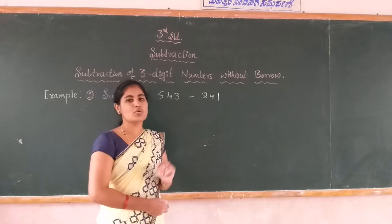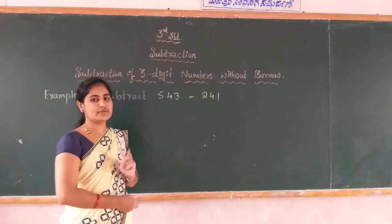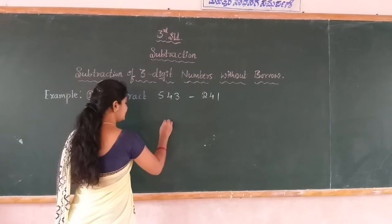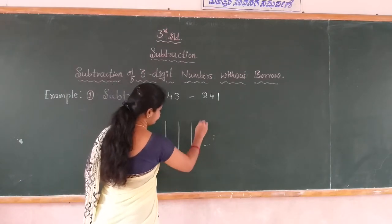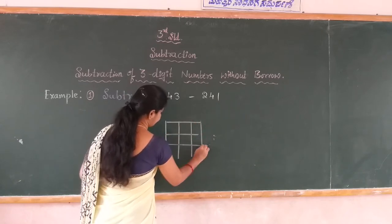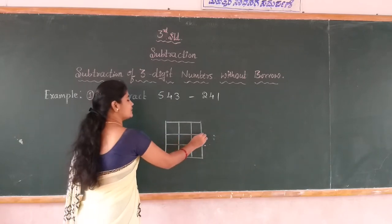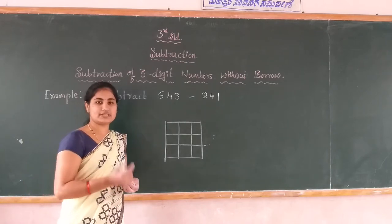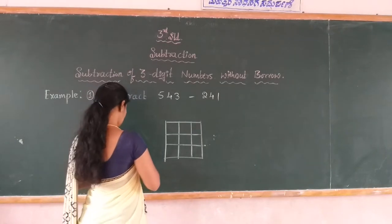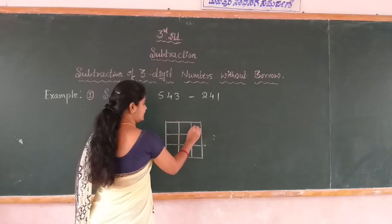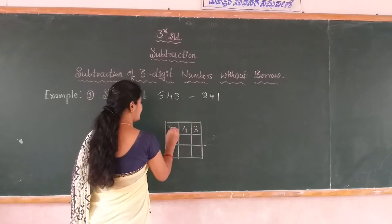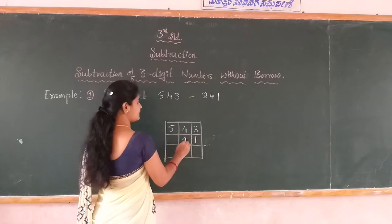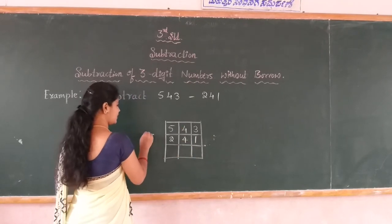Then you start the subtraction from the ones place, same as in addition. First write the biggest number on top and below it the smallest number with respect to place values. 3 is in ones place, 4 is in tens place, and 5 is in hundreds place. Below that, 1 is in ones place, 4 is in tens place, and 2 is in hundreds place. You put minus because it is a subtraction.